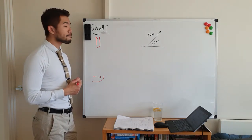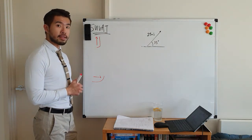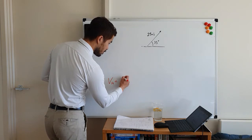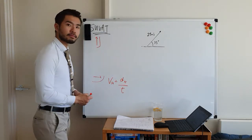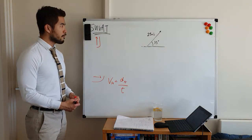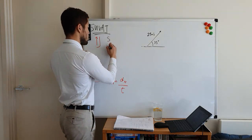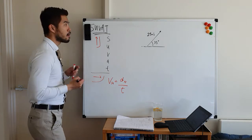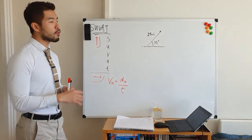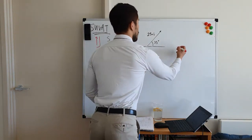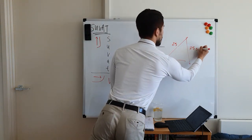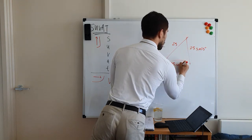In the horizontal direction, acceleration is zero. If acceleration is zero, we only need to use v-horizontal equals distance-horizontal over time. Because v-horizontal is not going to change, your horizontal velocity will remain constant. In the vertical direction we use SUVAT. We can't just use 25 meters per second directly because that doesn't separate into vertical and horizontal, so we need to turn it into components: 25 sine 35 degrees vertically and 25 cos 35 degrees horizontally.